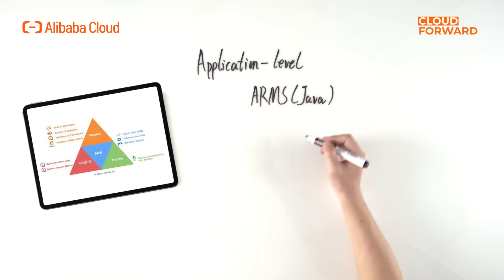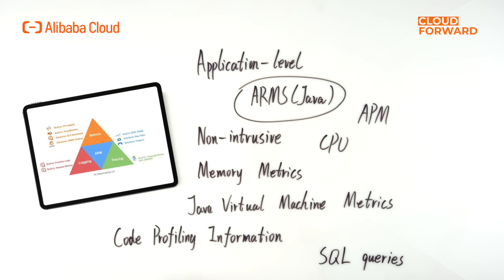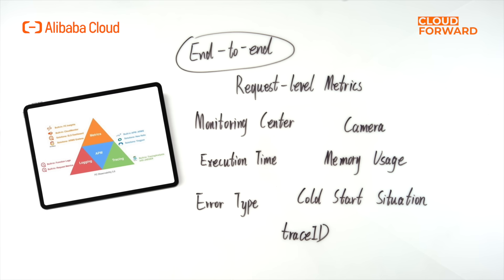To expose the system's status and provide application-level monitoring, Alibaba Cloud has integrated the Application Real-Time Monitoring Service, ARMS. With built-in Application Performance Management (APM) capabilities, FC seamlessly integrates ARMS application monitoring, and developers only need to add an environment variable to the functions to enable APM monitoring. The ARMS agent monitors application performance in a non-intrusive manner, providing application-level observability including CPU and memory metrics, Java Virtual Machine metrics, code profiling information, and SQL queries for function instances.